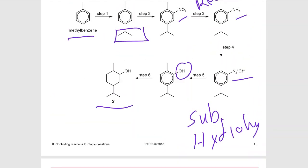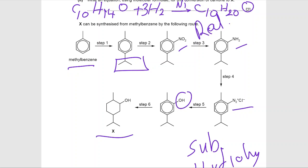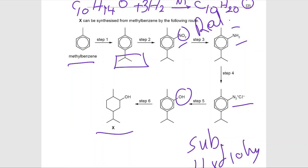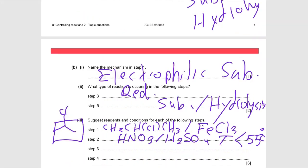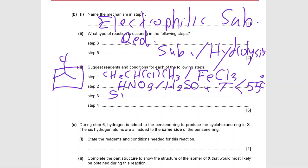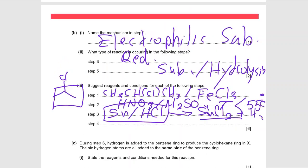In step three, reduction occurs: NO₂ is reduced to NH₂. The reagent to memorize is tin (Sn) in the presence of HCl, forming the reducing agent tin(II) chloride. In step four, to form the diazonium salt you use sodium nitrite (NaNO₂) and the temperature should be less than 5°C, or sometimes stated as less than 10°C - both are accepted.